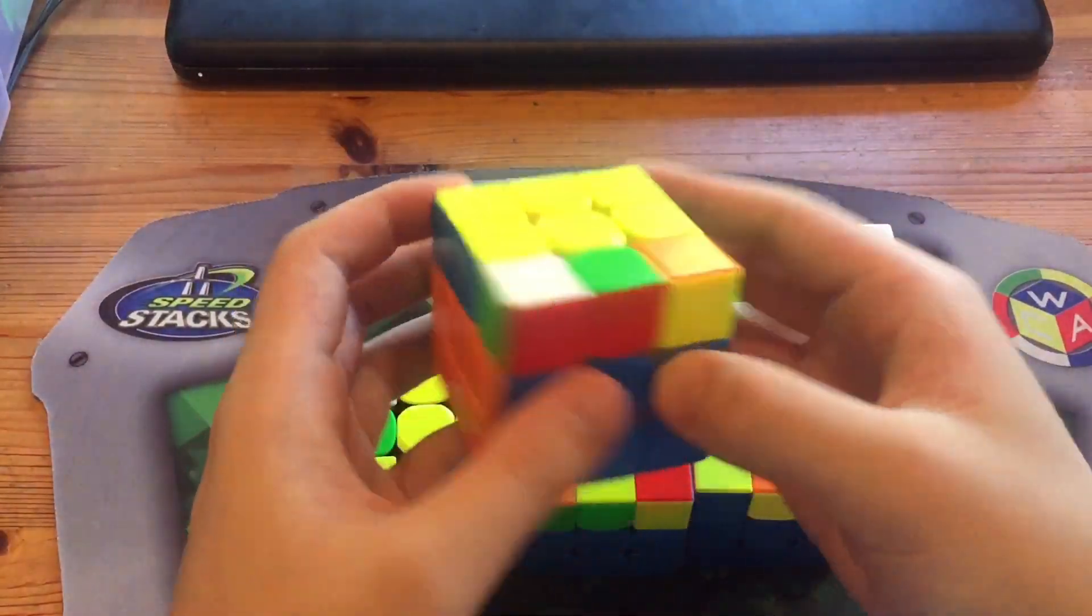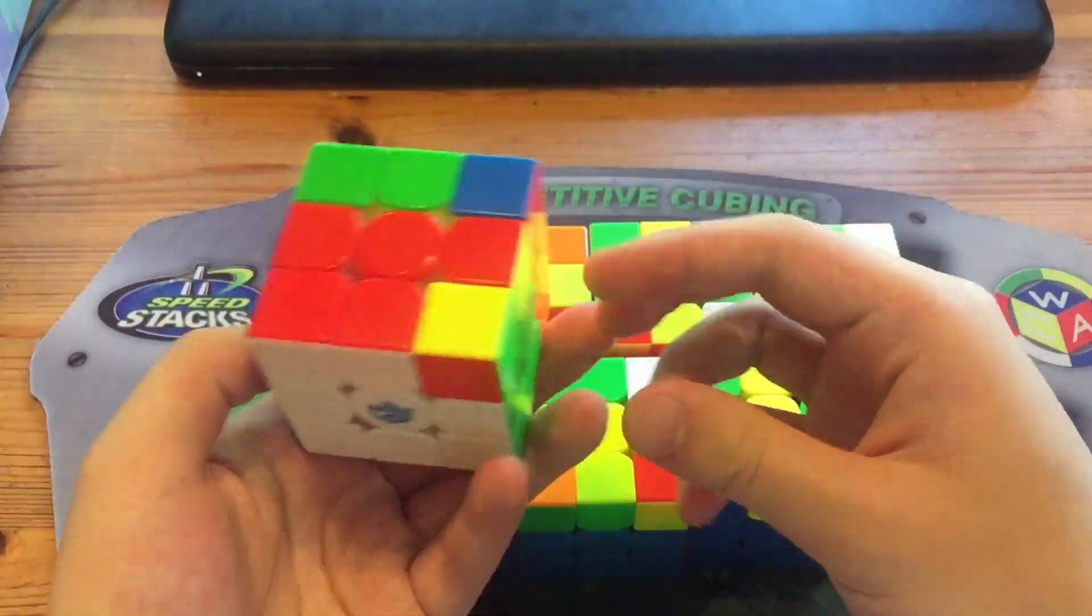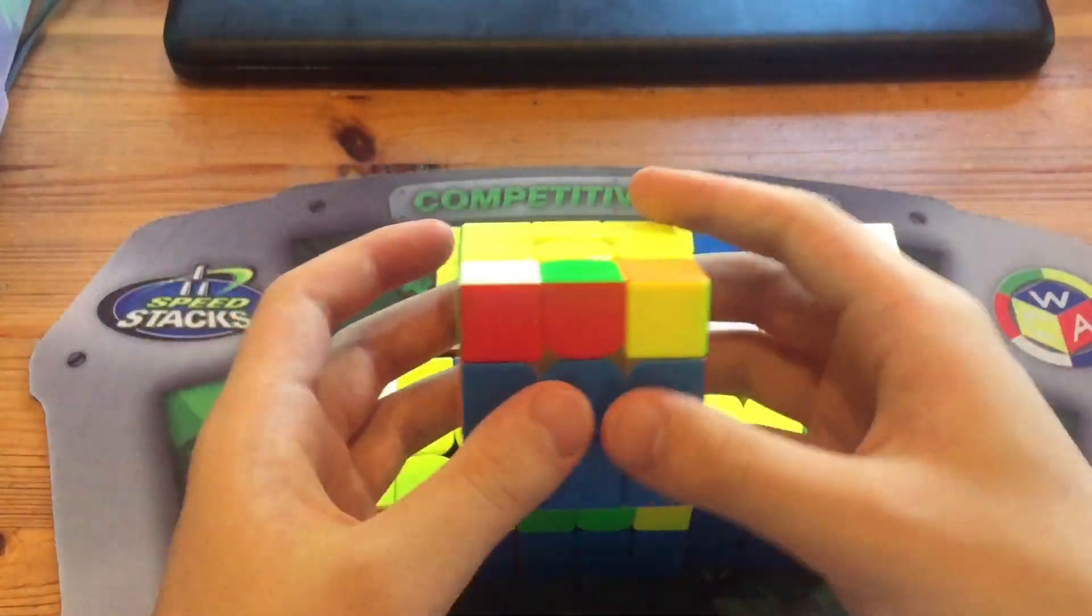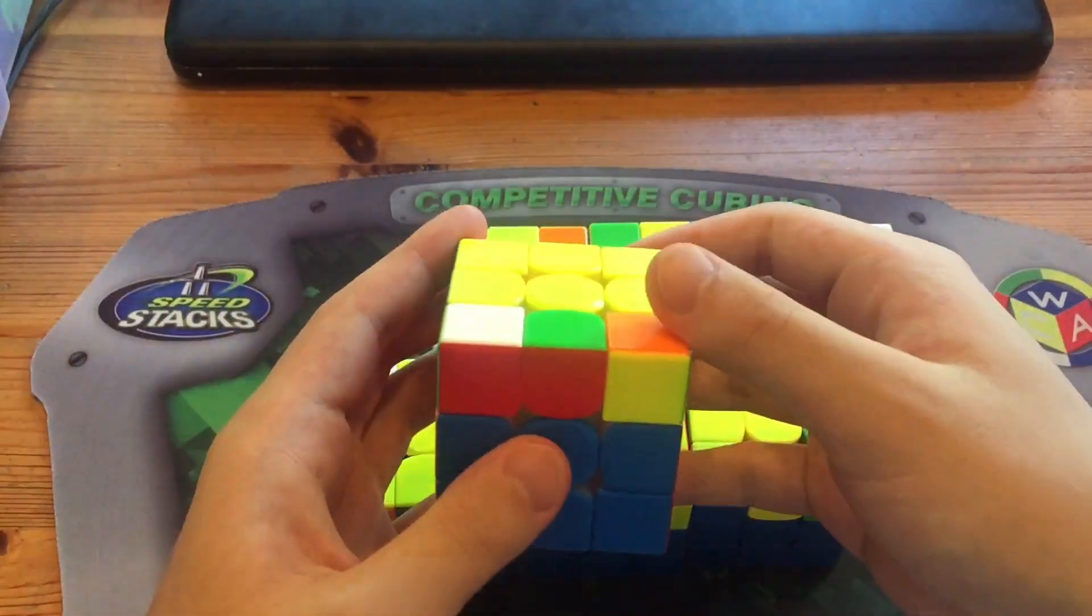This will be seven ways to solve this F2L pair rotationless when all your edges are oriented. So first, I'll be starting with the RU-gen ones.